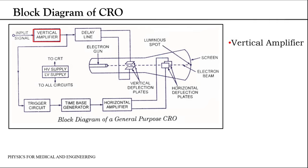Let's study the block diagram of this CRO. Now it is made of different blocks such as vertical amplifier, delay line, trigger circuit, time base generator, horizontal amplifier, and cathode ray tube.